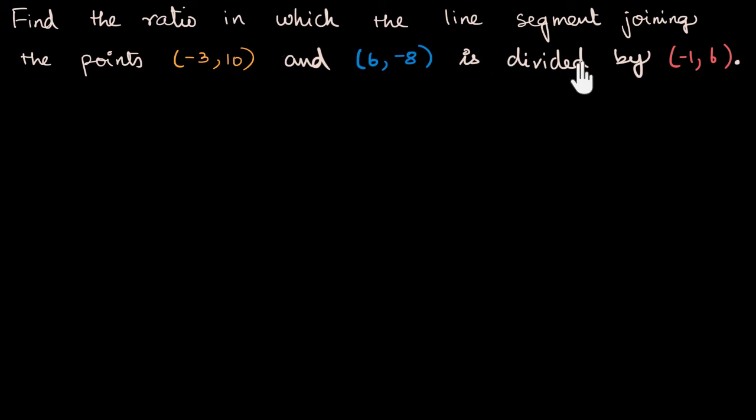I'm taking the word of the question setter that this point is on this line segment because it could not be, but I'm assuming that the question setter has already taken care of that. Assuming that's the case, I need to find the ratio in which it divides it.